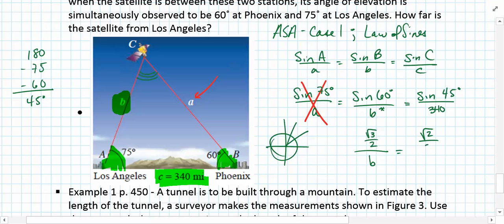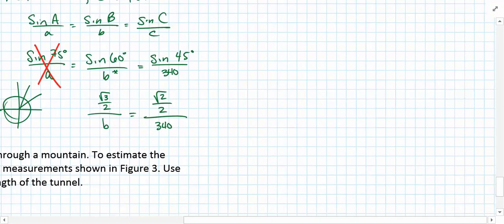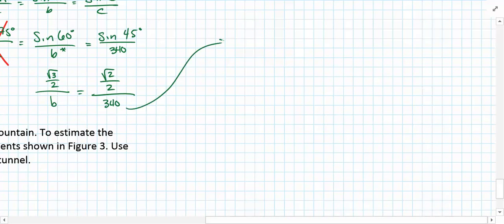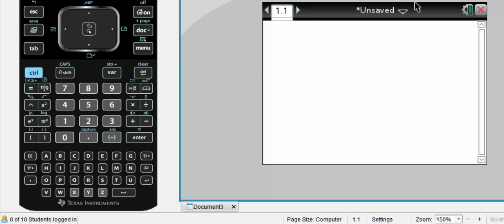Sine of 45 is square root 2 over 2, over 340. Now I'm running out of room here, but remember that anytime we have a proportion, we can cross multiply the two known values that are diagonal from one another and divide by the third to find our unknown value. So in this case, b would equal 340 times square root 3 divided by 2, divided by square root 2 over 2.